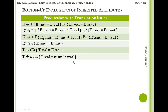In the previous lecture we have seen this example for evaluating synthesized attributes through top-down parsing. Each semantic action is treated as a leaf node, and during the depth-first traversal of the tree the semantic action is evaluated. Now, what if a bottom-up parser is to be used for the same?